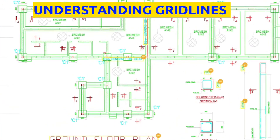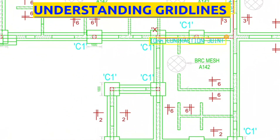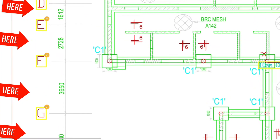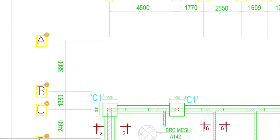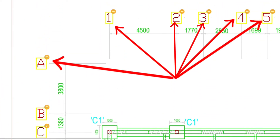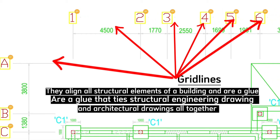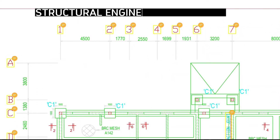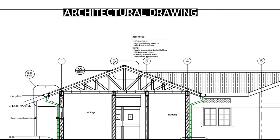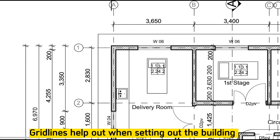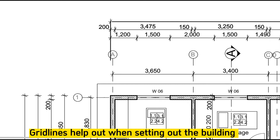Let's first clearly understand what grid lines mean. Grid lines align all structural elements of a building and are the glue that ties all structural engineering and architecture drawings together. Structural engineering drawings have the same grid lines as architecture drawings, and they help out during the process of setting out the building.